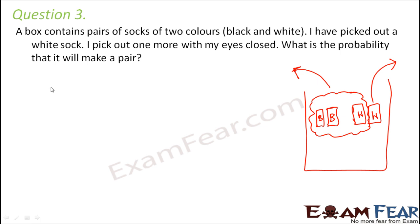In this case, what is the possibility of getting a white sock? What are the different possibilities? Total possible outcomes. Let's say when you close your eyes and you try to pick a sock, the total possible outcomes could be you can either pick a black sock or you could pick a white sock.